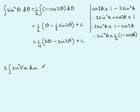So using that identity, then, we have the 3 times the half, 3 over 2. Avoid writing 1 and a half. And then we have the integral of 1 minus the cos of 10x, double the 5x, dx.